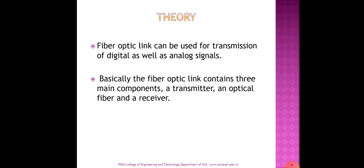The theory: a fiber optic link can be used for transmission of analog as well as digital signals. We need a transmitter module, a receiver module, and an optical fiber. The transmitter module consists of an inbuilt function generator, a limiter circuit, and a comparator circuit, plus a transmission circuit to transfer the optical signal. On the receiver side, the module consists of a photo detector circuit and an AC amplifier circuit to amplify the received signal.